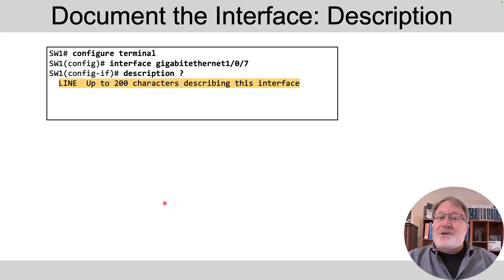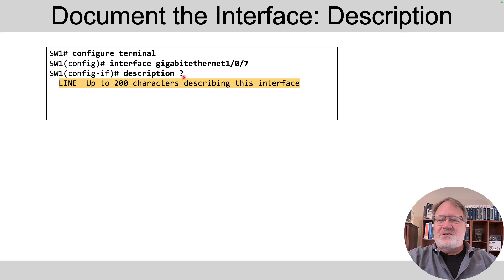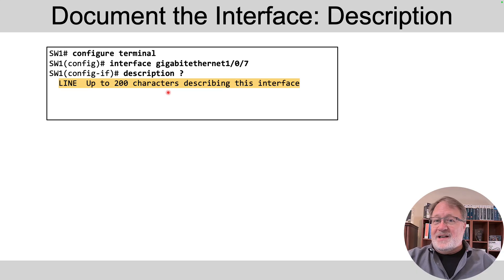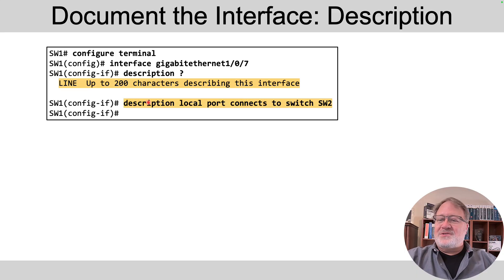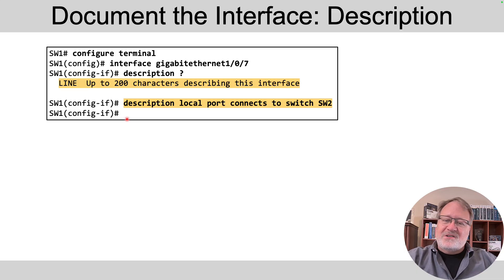New commands for this video: in interface mode we've got the description command. 'Description ?' tells us what it's about — it's just 200 characters of text, allowing spaces and special characters, to document the purpose of the interface. So here, maybe I type 'description local port connects to switch sw2' and press enter, and it just gives me a new line and accepts the command.